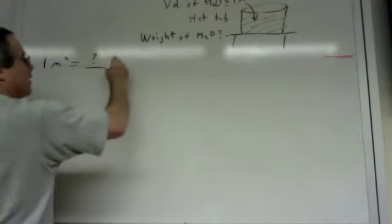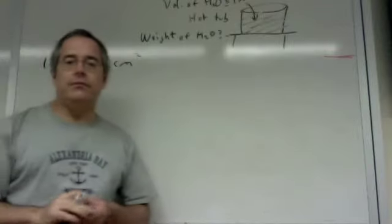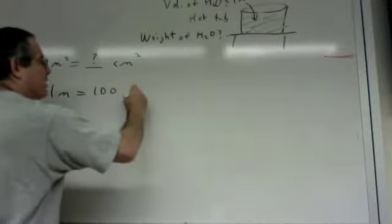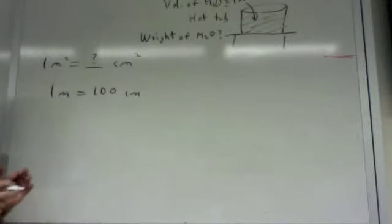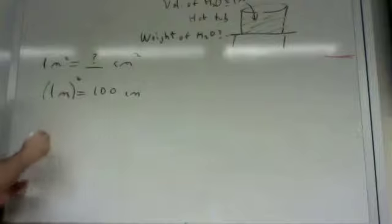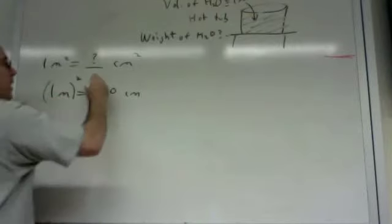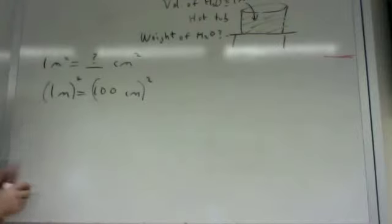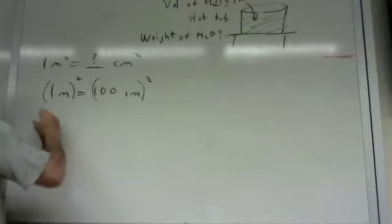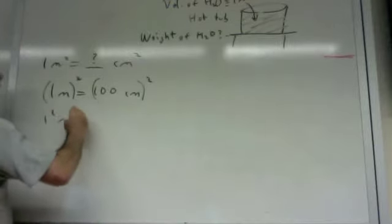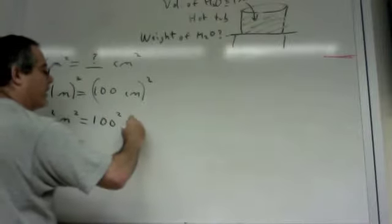Let's start with two simple ones. One square meter equals how many square centimeters? The way to do this is: one meter equals 100 centimeters. Now let's square both sides — square everything, not just the one, but the whole quantity. Square the whole hundred centimeters. When you square things in parentheses, everything inside gets squared. So that's one squared meter squared equals 100 squared centimeters squared.